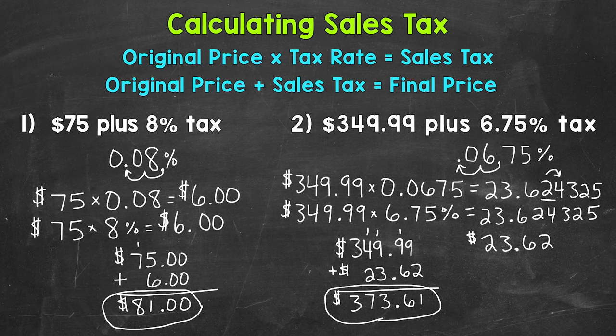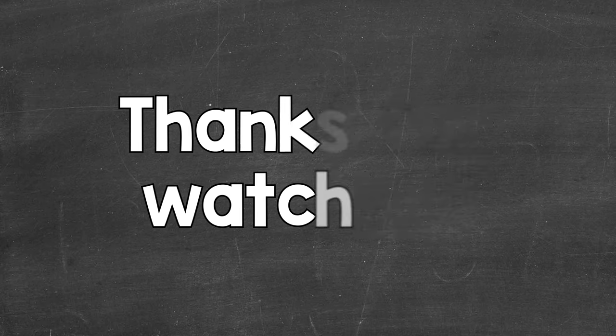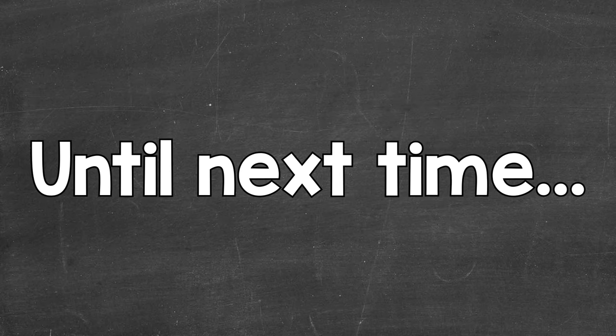So there you have it — that's how you calculate sales tax. Take the original price and multiply it by the tax rate, either in decimal form or using the percent button on a calculator. That gives you how much you'll pay in sales tax. Then add that to the original price to get the final price. I hope that helped. Thanks so much for watching. Until next time, peace.